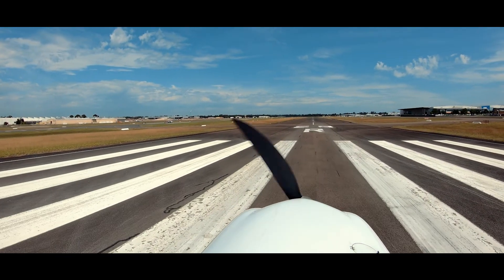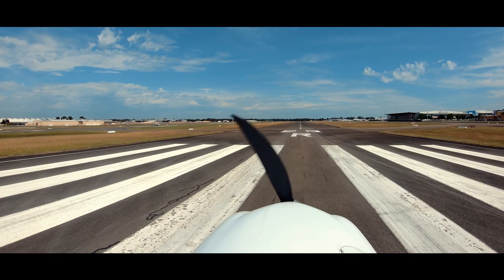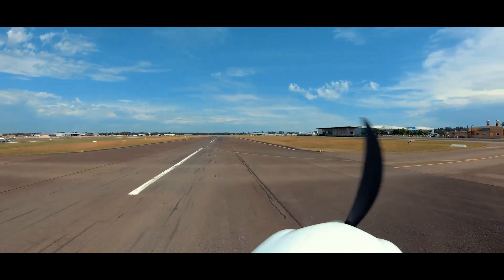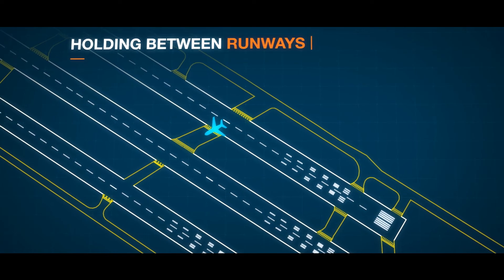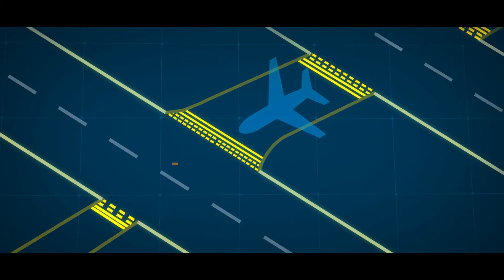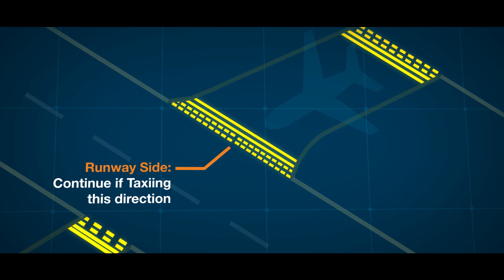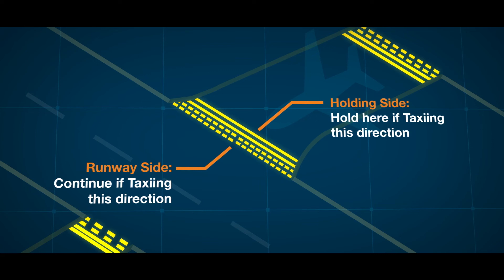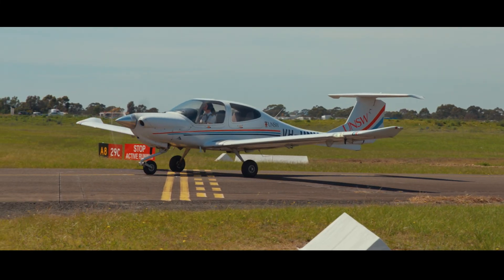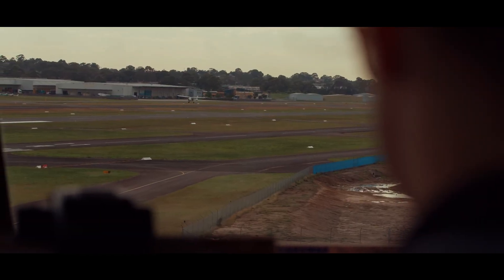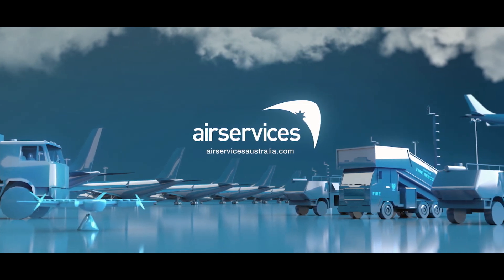Unless authorised by air traffic control, do not backtrack or hold on the runway in use. After landing, vacate the runway as soon as it is safe to do so. At locations that operate parallel runways, beware — you may need to hold short of the adjacent runway. Ensure you clear the runway and runway strip completely. You are permitted to cross from the dashed side to the solid side of a runway holding point after vacating the runway. Stop only if you are facing the solid yellow line of the next holding point. Always remember to ask air traffic control if you are unsure of the instructions provided, and collectively we can all work together to maintain safety on the aerodrome.